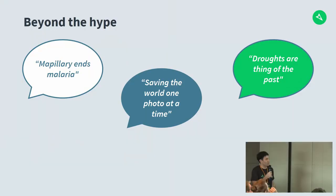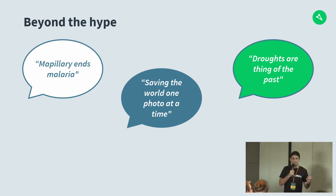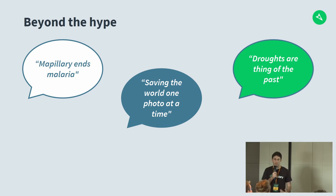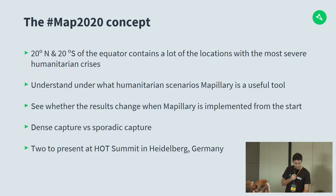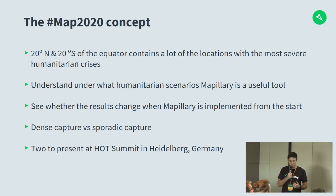The second project is in a similar vein but with a humanitarian focus. We've seen a lot of really bold statements — things like 'X technology helping end malaria' or 'saving the world one photo at a time.' There's often a desire to be hyperbolic around new technology. We wanted to get beyond this and see: is this technology actually helping, to what degree, and if it falls short, how can we close that gap? The Map2020 concept focused mostly within 20 degrees north and south of the equator — that's where the name came from — and aimed to close things out by 2020.